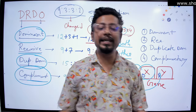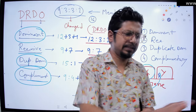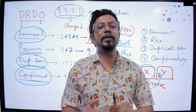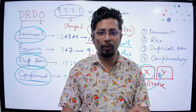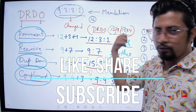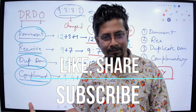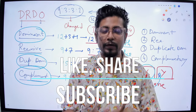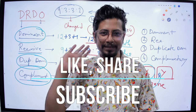That's how easy it is to remember epistasis — within about seven or eight minutes. If you invest this time, you'll never forget the epistasis ratios, because it's all about DRDO 12-9-15-94. If you liked this video, please hit the like button, share it with your friends, and subscribe to this channel for more videos. Thank you, bye.